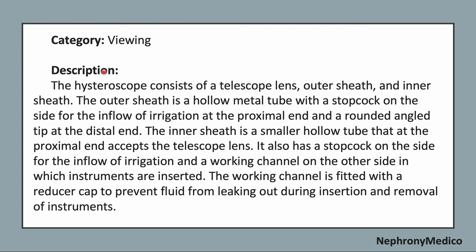Now, identifying points. The hysteroscope consists of a telescope lens, outer sheath, and an inner sheath. The outer sheath is a hollow metal tube with a stopcock on the side for the inflow of the irrigation at the proximal end and a rounded angle tip at the distal end. The inner sheath is a smaller hollow tube that at the proximal end accepts the telescope lens.